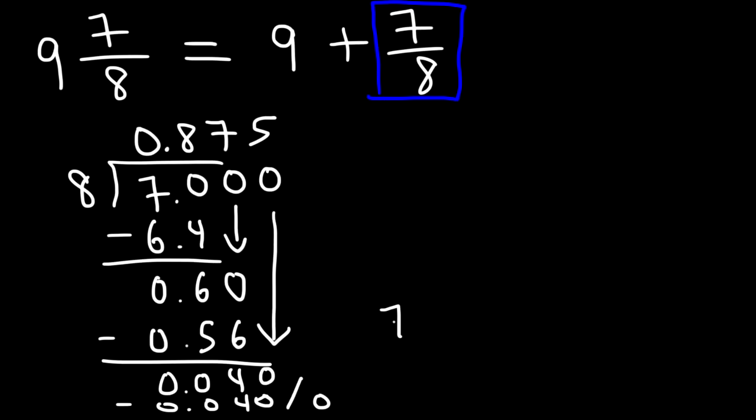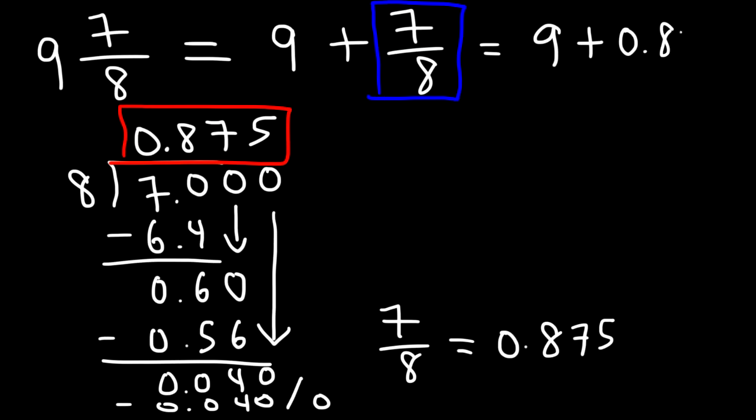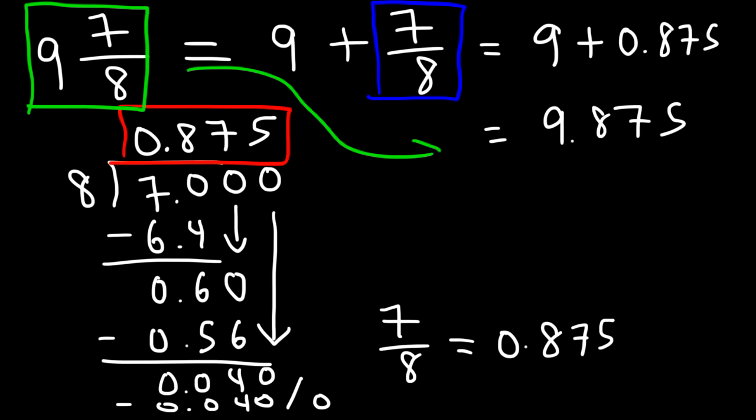And so we could say that 7 over 8 is equal to the result that we see here, and that is 0.875. So this is 9 plus 0.875. And so that's 9.875. Thus, that is the value of this mixed number. 9 and 7 eighths is 9.875.